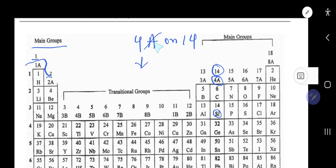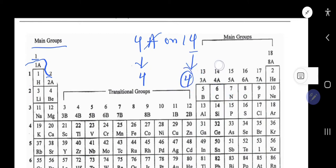For group 4A, just consider the number and cancel the subgroup letter, so we get four. For group 14, just consider the units place digit and you get four. So silicon has four valence electrons.